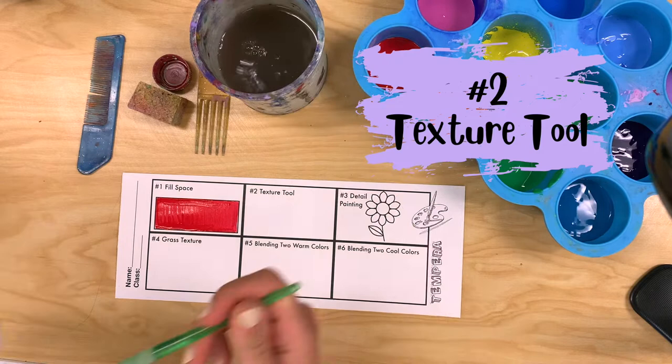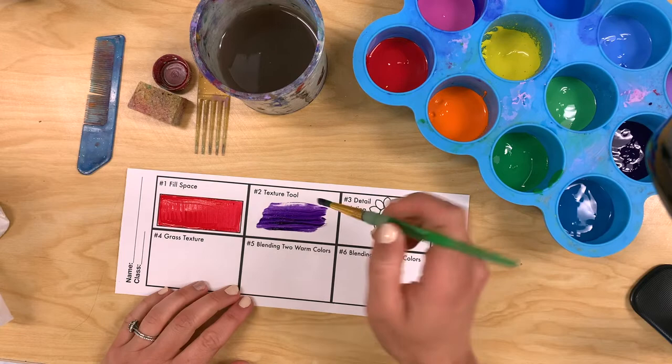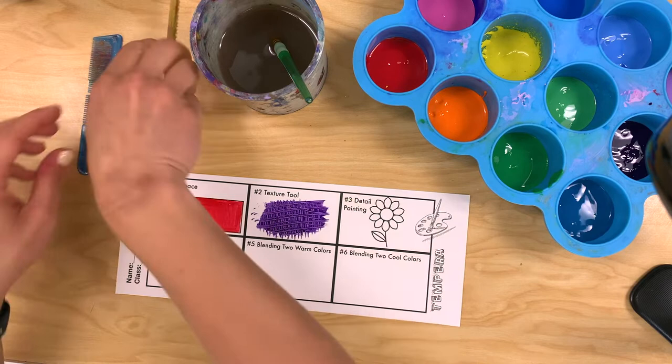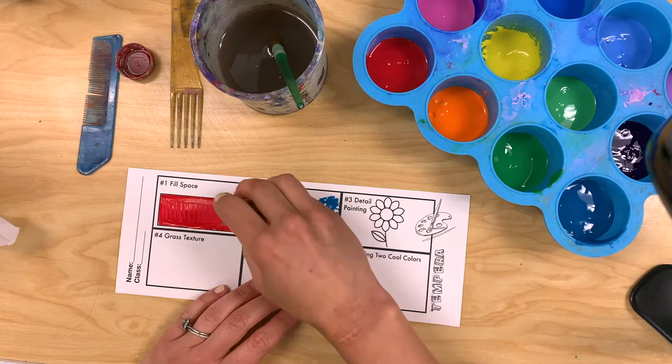Now we'll move on to our second technique which is using texture tools. This can be a really fun way to paint. You could add texture to mountains, clouds, or grass—anything that really adds a feeling to what that surface would feel like.